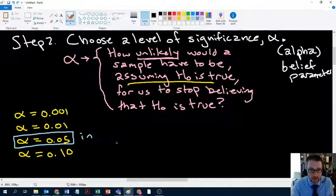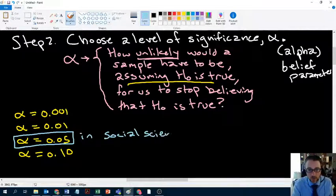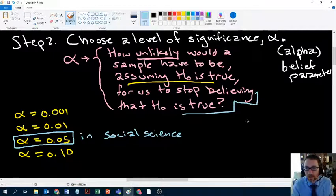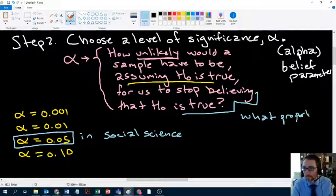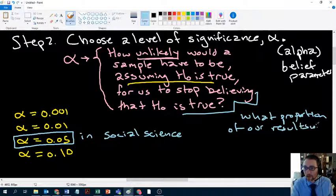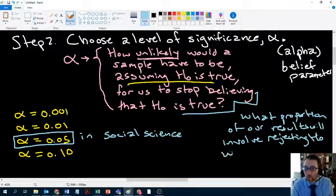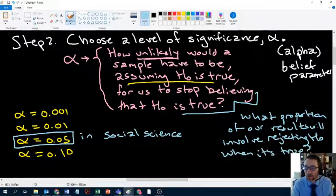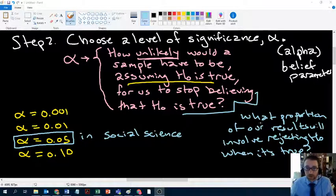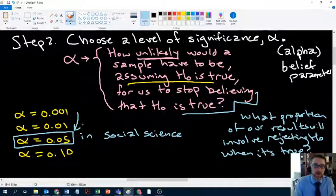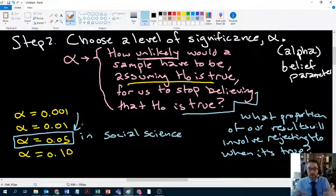One thing to keep in mind is that when we're choosing an alpha, another thing that alpha is measuring is what proportion of our results will involve rejecting the null when it's true. So what proportion of our results will involve rejecting the null when it's true? And when we, if we reject the null at a 5% rate, if we say we have to witness something that's a 5% or less event, in order for us to reject the null, well, 5% events happen 5% of the time.